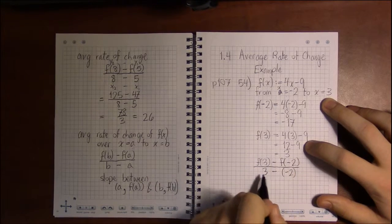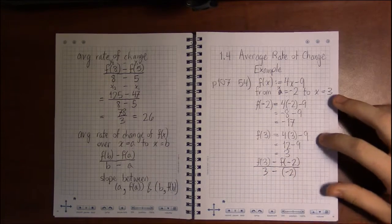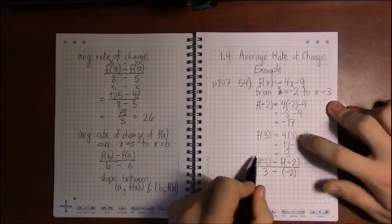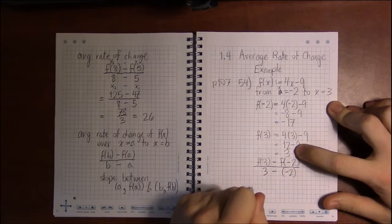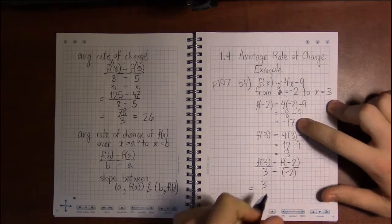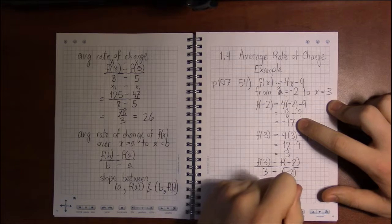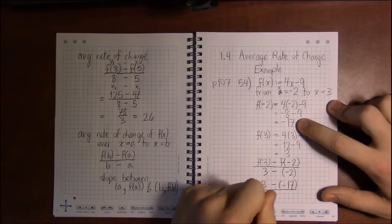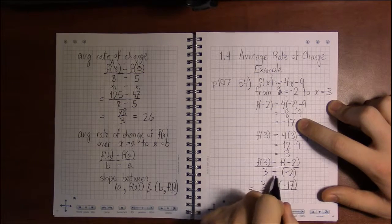So we do 3 minus -2. And plugging in the values we got, we saw that f(3) was 3 and f(-2) was -17, and we'll divide that by 3 minus -2.